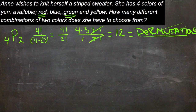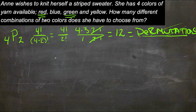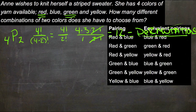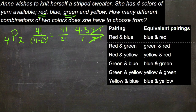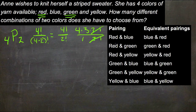So if we chose red and green, or green and red, they're going to be the same possibility — because whether she knits the scarf using red first and then green, or green first and then red, either way it's still going to be a red and green scarf. Here's all the possibilities: red and blue, red and green, red and yellow, green and blue, green and yellow, and yellow and blue.